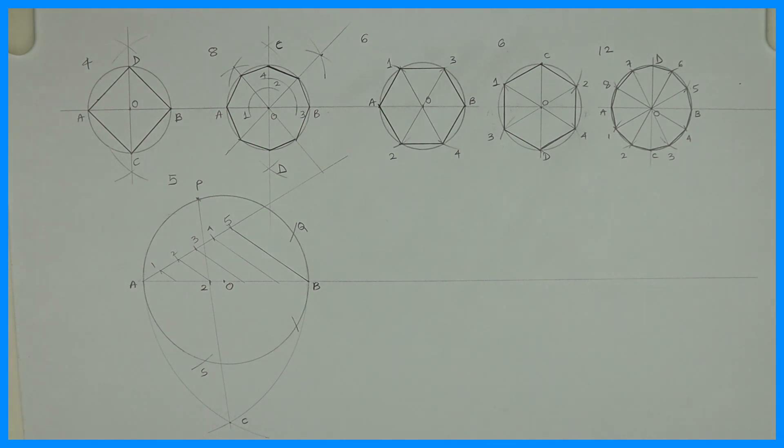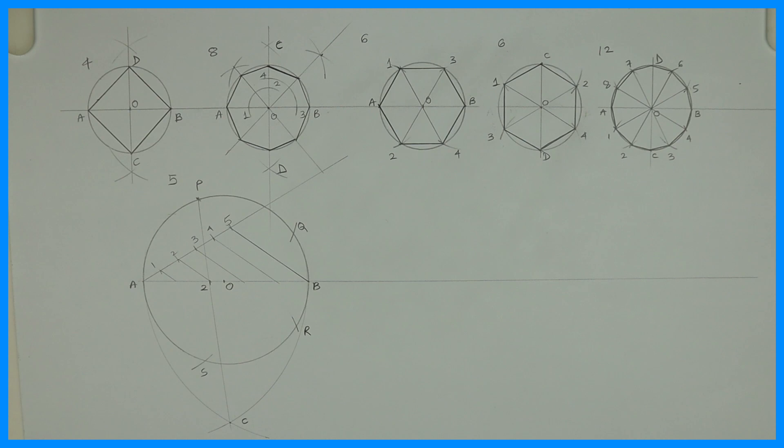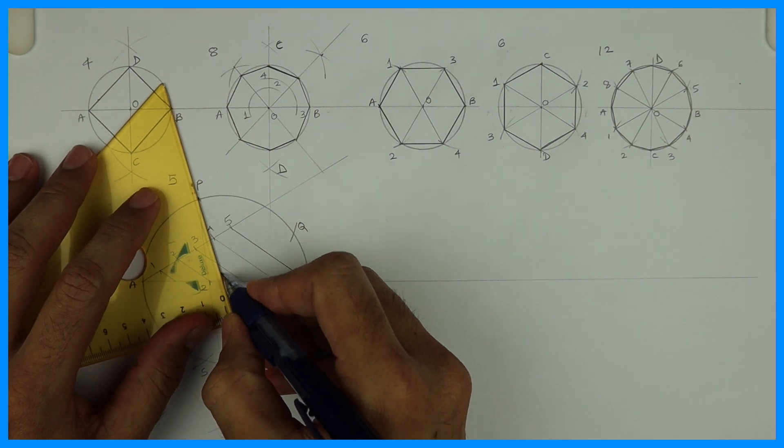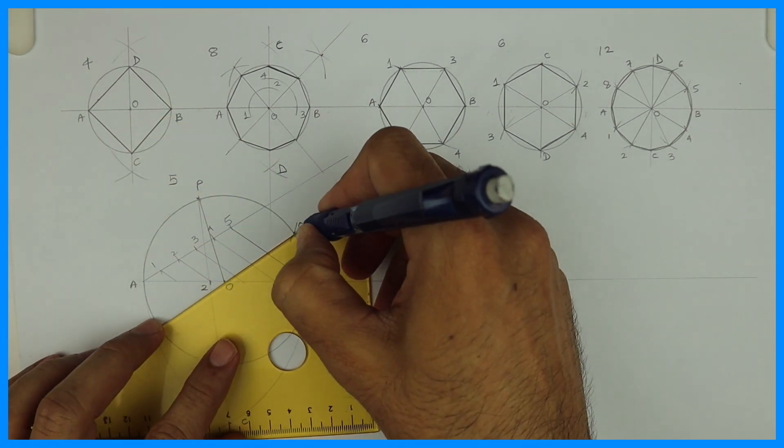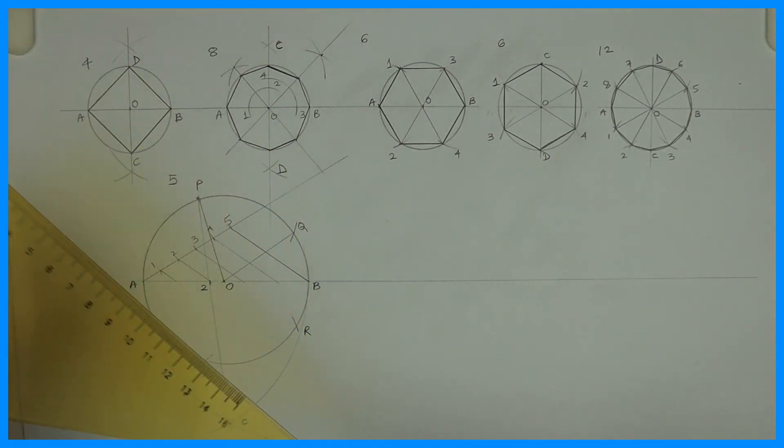You could have done it from Q also. You know P, Q, R, S clockwise. But it is always advisable to do it one up one down to minimize the error. If there is any error, then it will get minimized. Then join O to P, O to Q, O to R, and O to S. So you will get five parts.